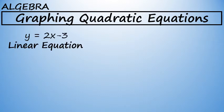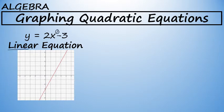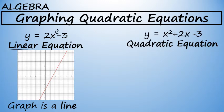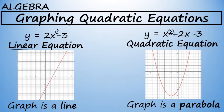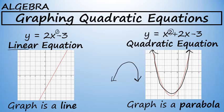Do you know what the graph of a linear equation looks like? A linear equation, an equation in the form y equals something times x to the first power, is a straight line. On the other hand, the graph of a quadratic equation — where the highest power on x is 2 — is a parabola, this u-shaped curve. A parabola could be facing up or facing down.